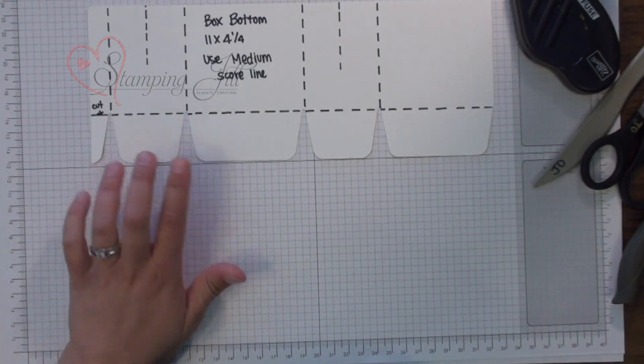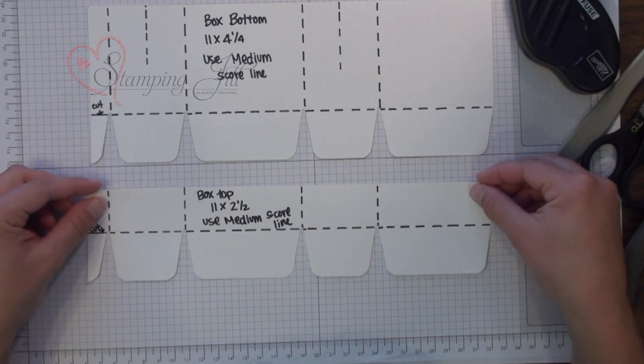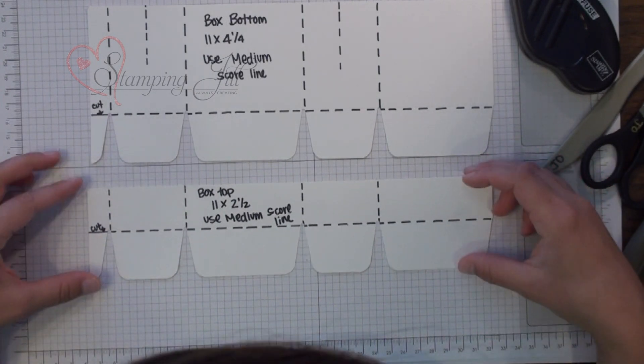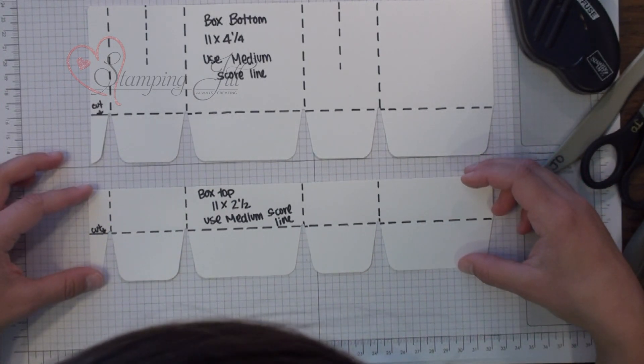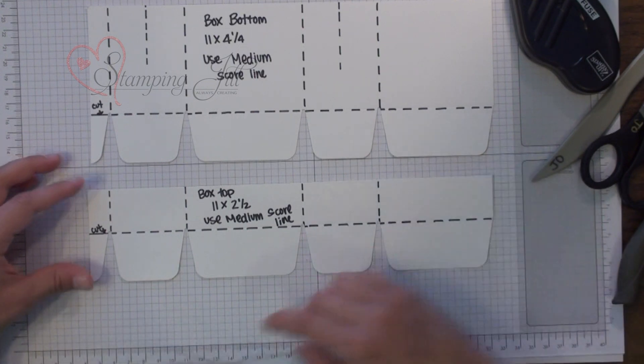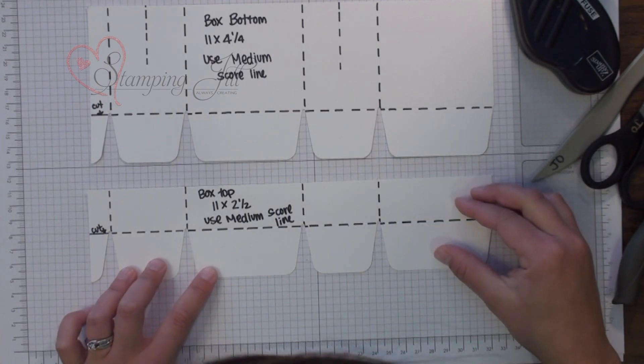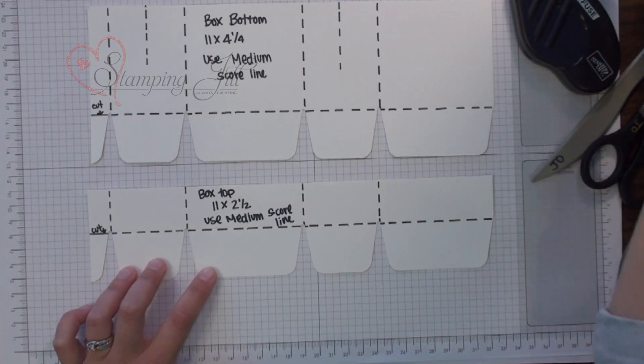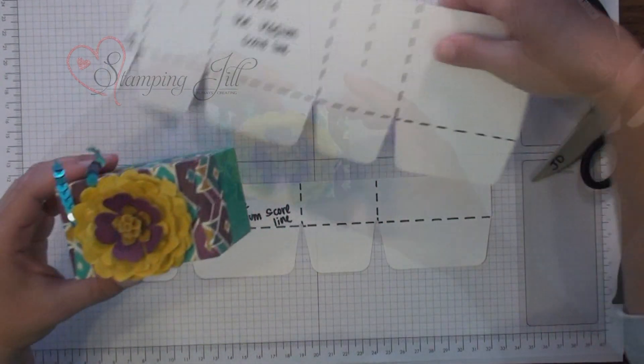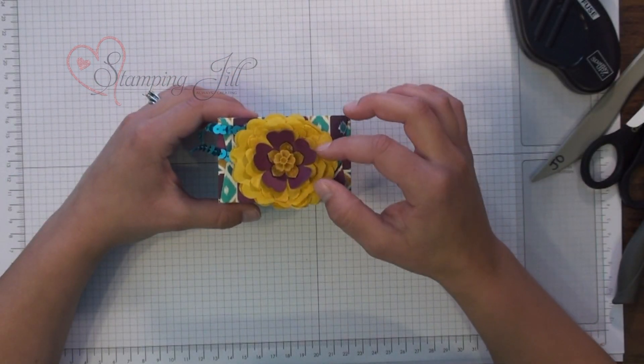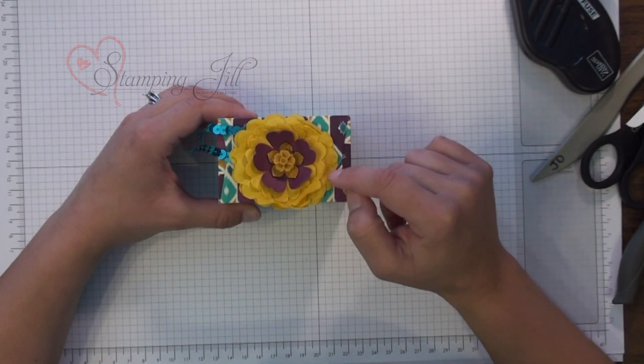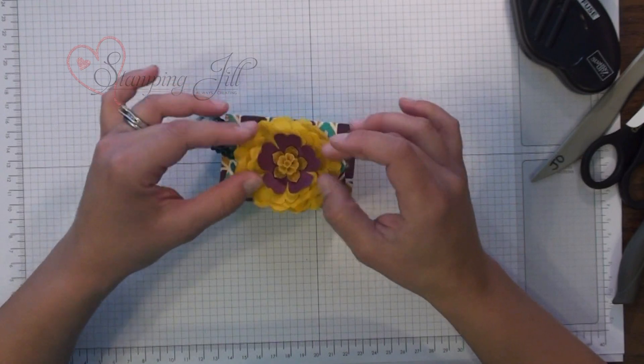And then the top of the box is the same way. You just do a smaller piece of paper it's eleven by two and a half and the same thing you do all the score lines but you don't do the gussets for it. And it creates a fun box top and for the flower on the top I used the new cotton paper assortment and made a cute little flower.